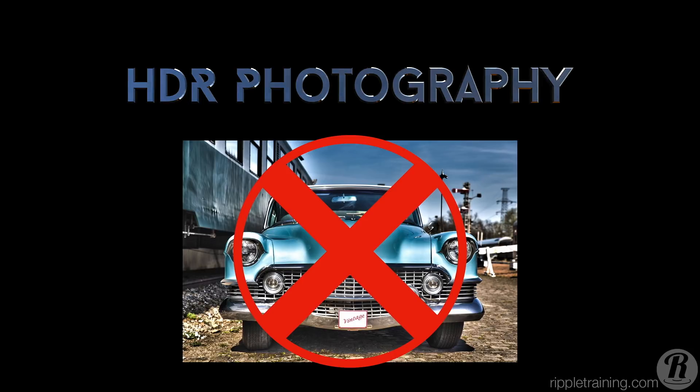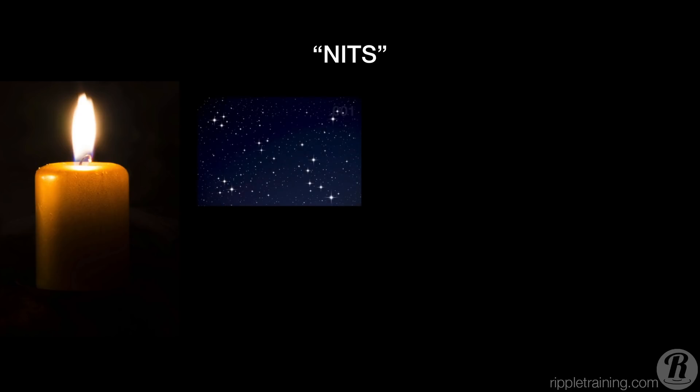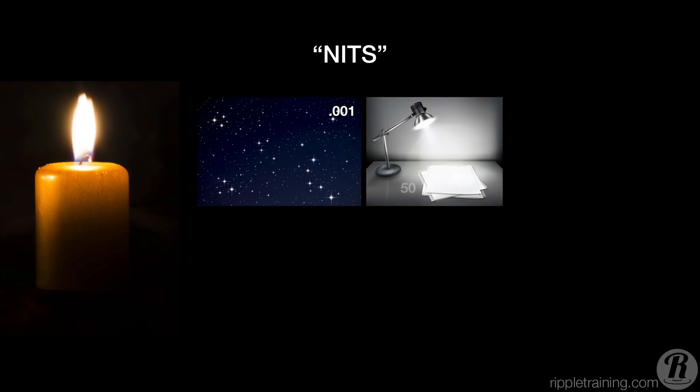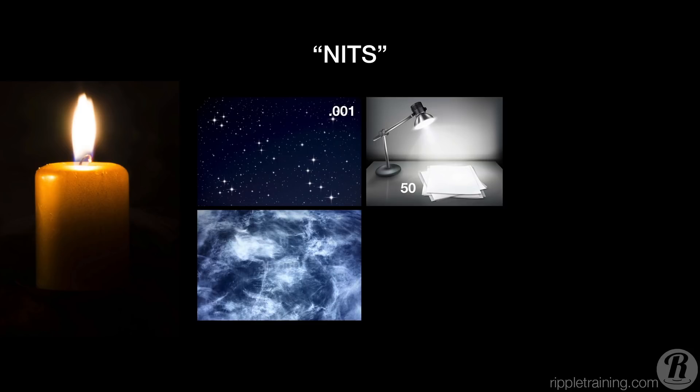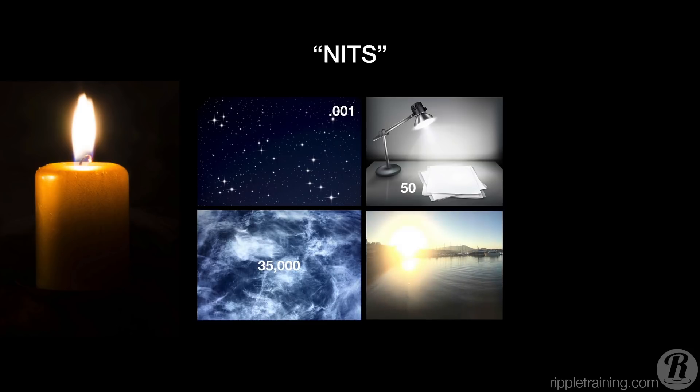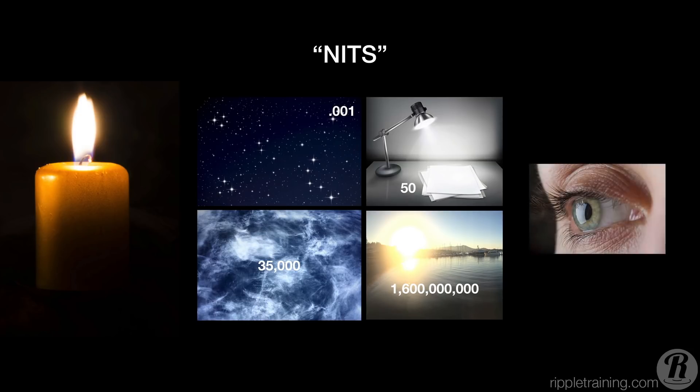By dynamic range, we are referring primarily to the range of brightness values of the display device rather than our source material. This brightness is measured in units called nits. One nit is the brightness of a candle spread over a square meter. The night sky is about 0.001 nits. A piece of paper under a lamp is about 50 nits. Clouds on a sunny day can be 35,000 nits. The sun is 1.6 billion nits, but the brightest thing our eyes can tolerate is about 50,000 nits.